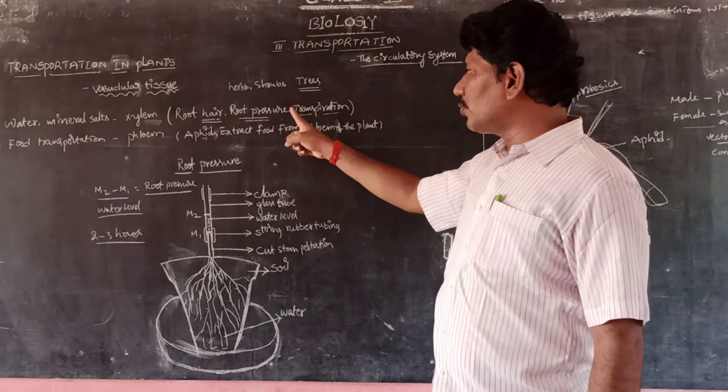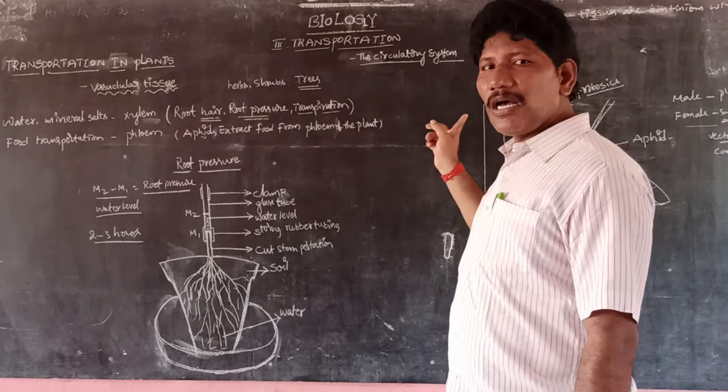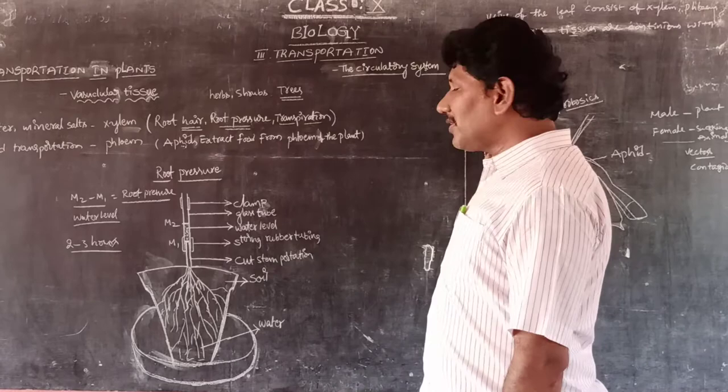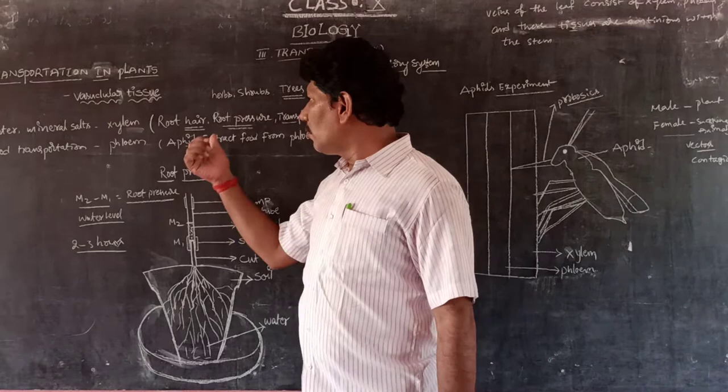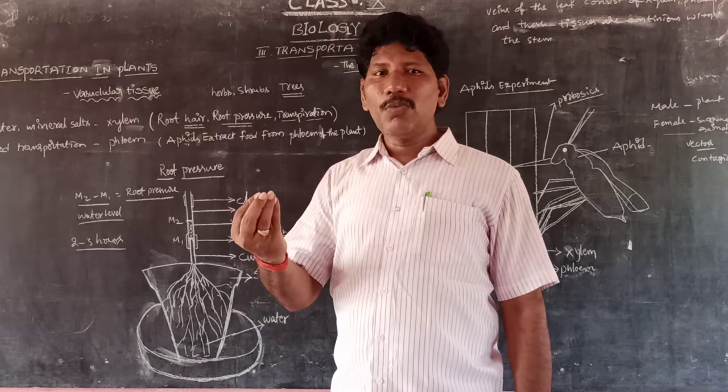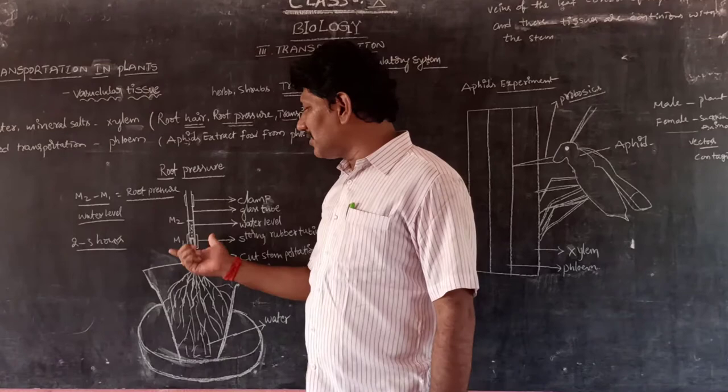Today we are going to discuss root pressure, transpiration, and how food is transported in the phloem tissue. Root pressure means the roots push water to some extent against gravitational force. We can understand this very easily through one experiment.